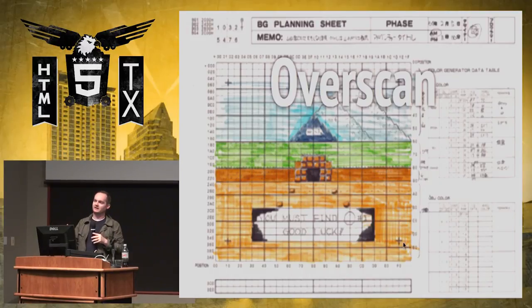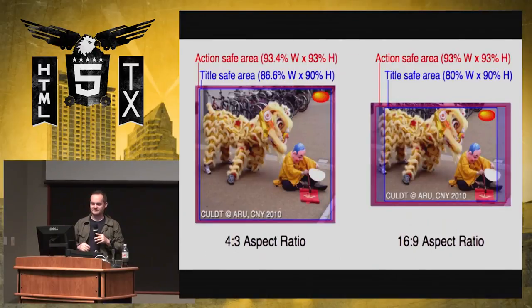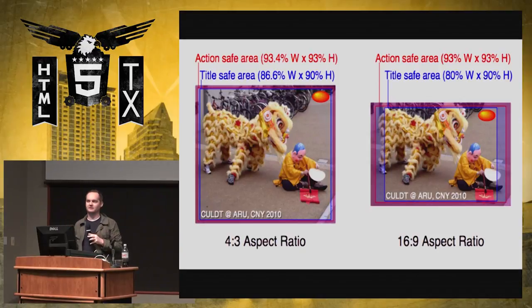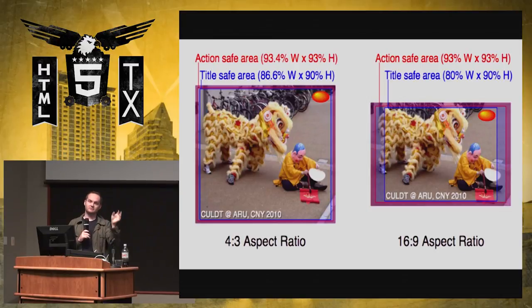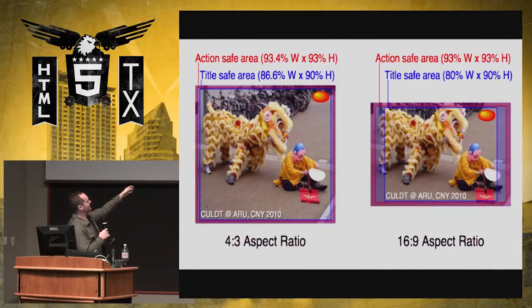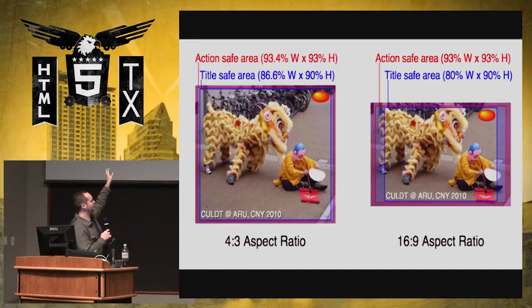This is them planning for overscan, because TVs will display different parts of the image being broadcast. Historically, bits of information have been sent along the side to help the TV do alignment — they would actually send metadata through that. So there's this notion of overscan, where you have an action-safe area and a title-safe area, which is the innermost region where core information should be. Everything outside that could totally get cut off.